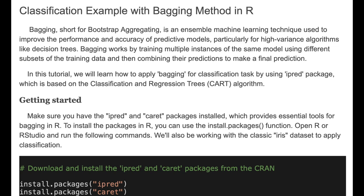Bagging, short for Bootstrap Aggregating, is an ensemble machine learning technique used to improve the performance and accuracy of predictive models. Bagging works by training multiple instances of the same model using different subsets of training data, and then combining their predictions to make a final prediction.